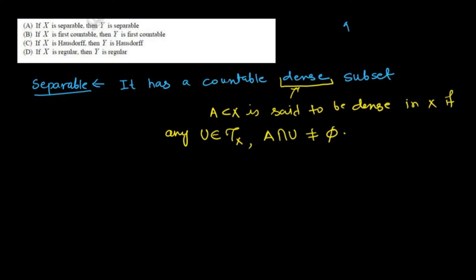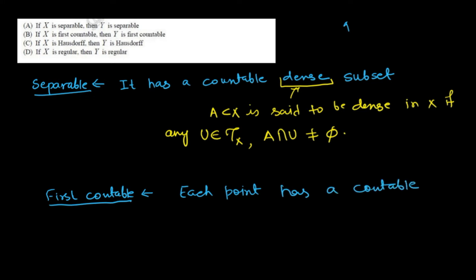First countable means that for any point of X, you have a countable neighborhood basis around that point. So each point has a countable neighborhood basis, which is also called a local basis. This is of course a local property.